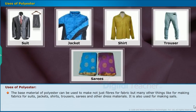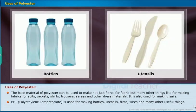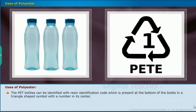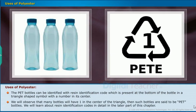Uses of Polyester: The base material of polyester can be used to make fibers for fabric as well as many other things — fabrics for suits, jackets, shirts, trousers, saris and other dress materials, and sails. Polyethylene terephthalate (PET) is used for making bottles, utensils, films, wires and many other useful products. PET bottles can be identified with a resin identification code present at the bottom of the bottle in a triangle-shaped symbol with a number in its center.